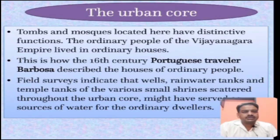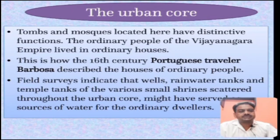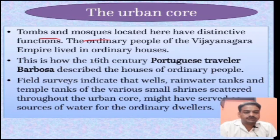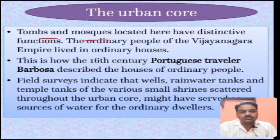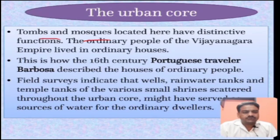Tombs and mosques located in the urban core tell us about the presence of people who were not from the Hindu religion but from Islam. This is how the 16th century Portuguese traveler Barbossa described the houses of ordinary people - he also traveled to that area because the Portuguese came to South India for trade, and India's alternative sea route was discovered by the Portuguese explorer Vasco da Gama. Later many Portuguese travelers came to the Vijayanagara area and wrote about it.